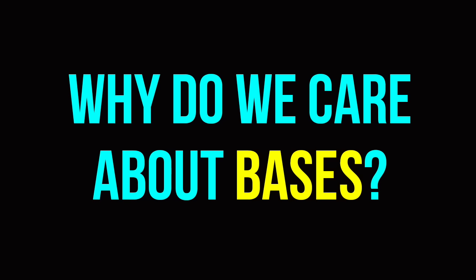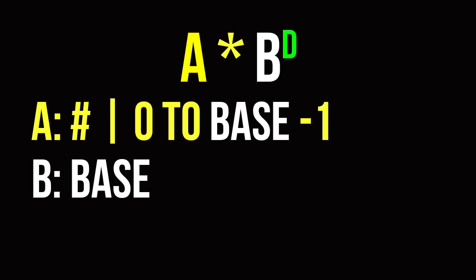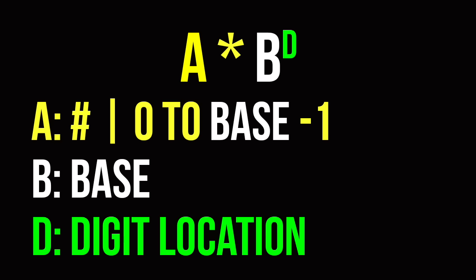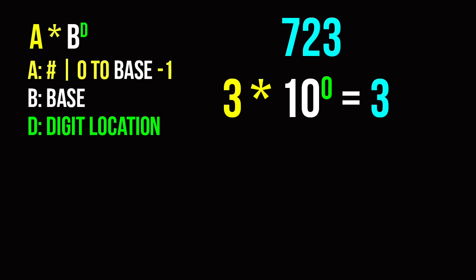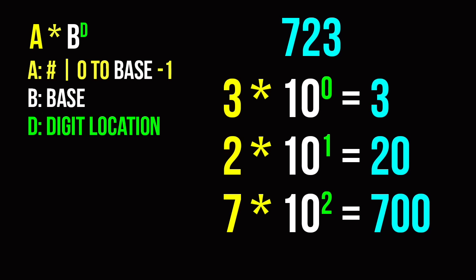So what do all these bases have to do with anything? Think of this formula. You have A, which is a number from 0 to the base minus 1 — so that was like our 7, 2, 3, our digit value. Then we had that times our base B, which was 10, and D was the numerical digit location with the location starting at 0. So we had 3 times 10 to the zeroth because it was at the zeroth location, then 2 times 10 to the first, then 7 times 10 to the second.